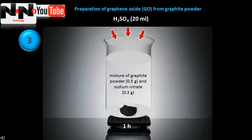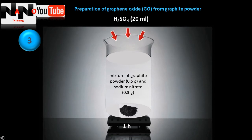On the other side, graphene oxide is prepared from graphite powder. For this purpose, 20 milliliters of sulfuric acid is added to the mixture of 0.5 gram graphite powder and 0.3 gram sodium nitrate.